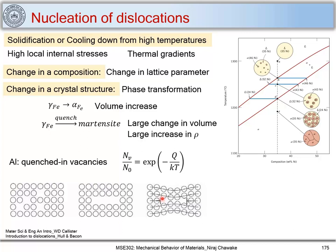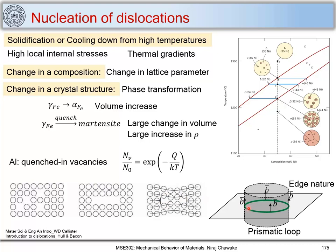This loop is a prismatic loop which has formed. This kind of prismatic loop forms during quenching of FCC materials. These are the several reasons by which dislocations nucleate.